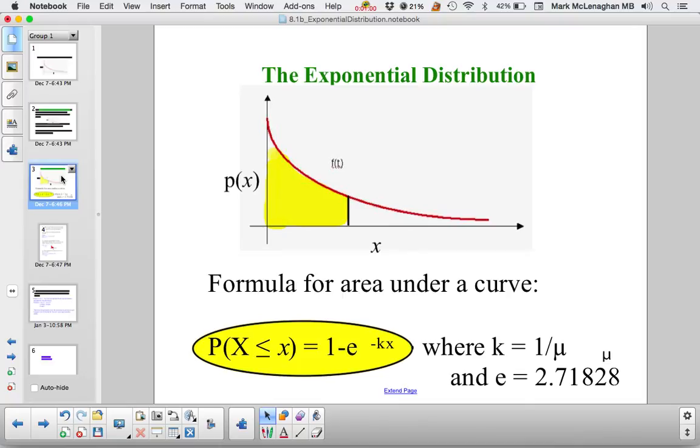Equals 1 minus e to the negative kx, where k equals 1 over mu, which is the mean, and e is 2.71828, which is the constant on your calculator. Look for the e^x button on your calculator.